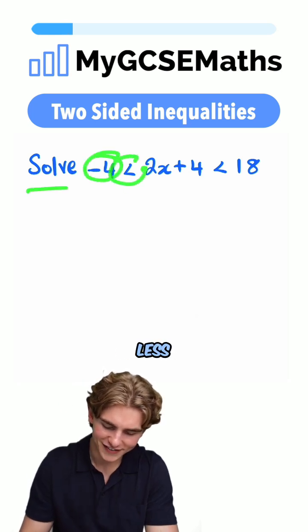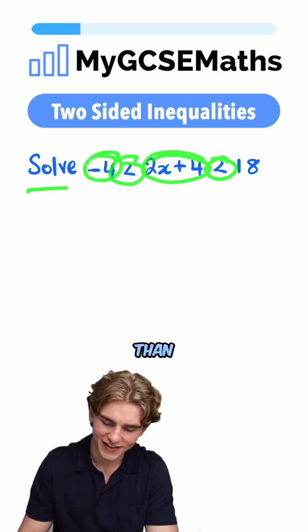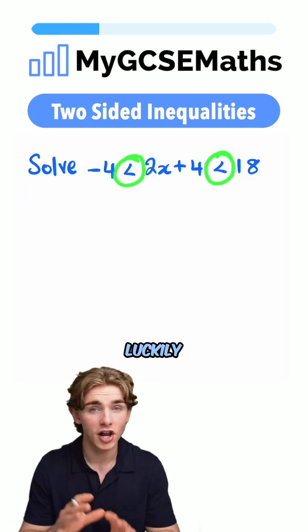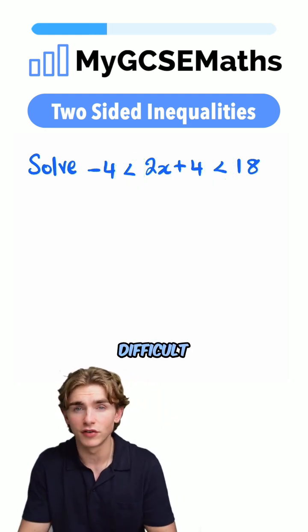It says solve -4 < 2x + 4 < 18. Now, what's tricky about this is we can see that it has two inequality symbols in it. Luckily though, it's not actually too difficult to work with.